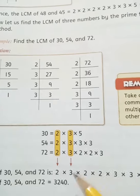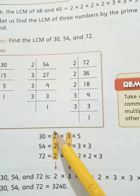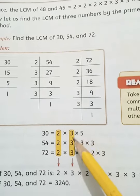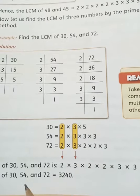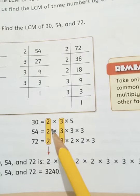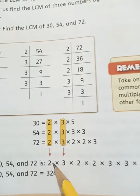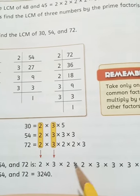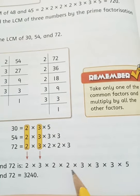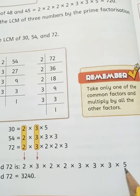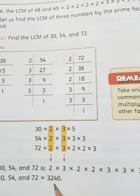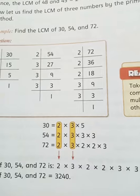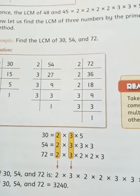जब LCM निकाला तो common 2 को एक दफा लिखा, common 3 को एक दफा लिखा, और बाकी सारे factors भी लिखे, सब को multiply कर लिया। तो आ गया 3240. चीक बेटे।